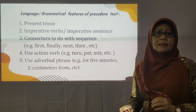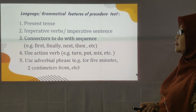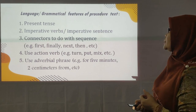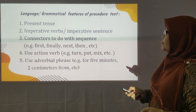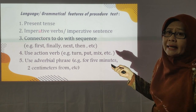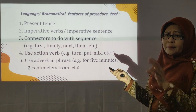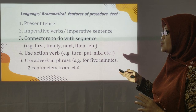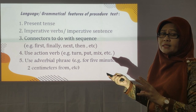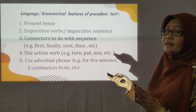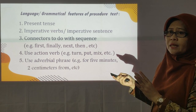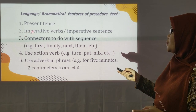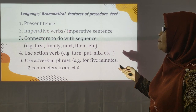If you have known about the generic structure, you must also know about the language or grammatical features. Procedure text uses present tense — subject, verb 1, with 'as' or 'is', followed by object. The second feature is it must use imperative verbs or imperative sentences. There are two kinds of imperative sentences: positive or negative — in other words, instruction or prohibition.